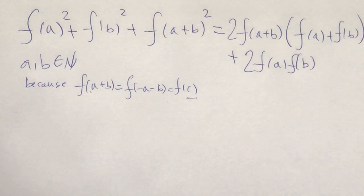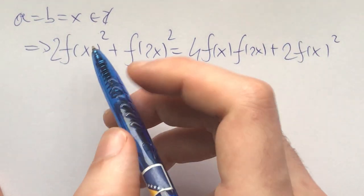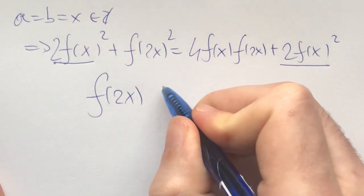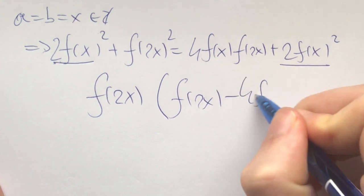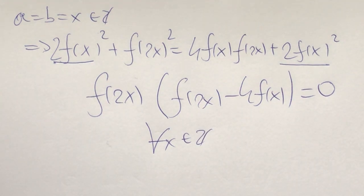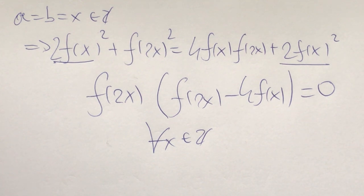So here are some of my first ideas. The first idea is to plug in a = b = x and see what happens when they're identical. What we get is we can cancel out two f(x)² terms on both sides and we're left with f(2x)·(f(2x) − 4f(x)) = 0 for all integers x. My intuition was to plug in specific values like 1, 2, 3, 4, 5 and build up to a solution.